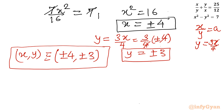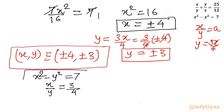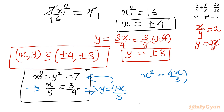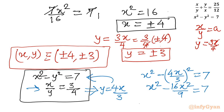Now solving the second system: x squared minus y squared equals 7 and x over y equals 3 over 4. From this second equation, y equals 4x over 3. Substituting into the first equation: x squared minus (4x over 3) squared equals 7, giving x squared minus 16x squared over 9 equals 7. Combining: 9x squared minus 16x squared over 9 gives minus 7x squared over 9 equals 7.